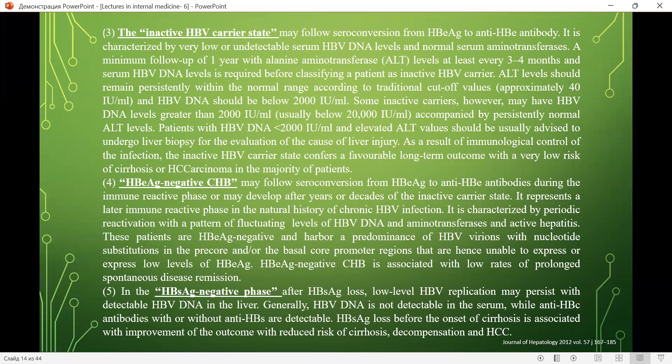ALT levels should remain persistently within the normal range according to traditional cut-offs. HBV DNA should be below 2,000 units/mL. Some inactive carriers may have HBV DNA levels greater than 2,000 units/mL accompanied by persistently normal ALT. Patients with HBV DNA less than 2,000 units/mL and elevated ALT should be advised to undergo liver biopsy or evaluation of the cause of liver injury.